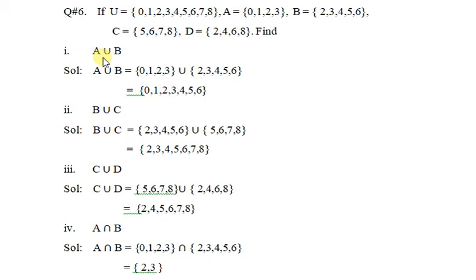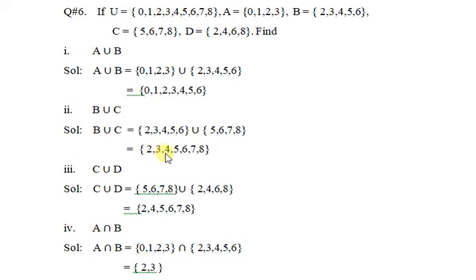A union B is equal to the set of A union set of B. That means you have to write both elements of set A and set B in a proper sequence. For B union C, you have to write set B union set C — 2, 3, 4, 5, 6, 7 and 8 — arrange them in sequence.